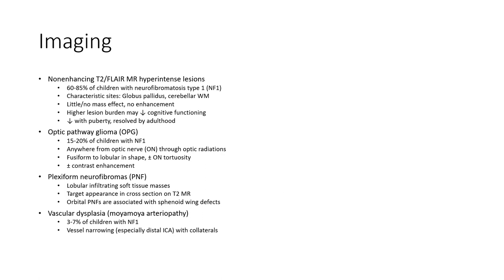Imaging: Non-enhancing T2 FLAIR hyperintense lesions are seen in 60–85% of children with neurofibromatosis type 1. Characteristic locations include the globus pallidus and cerebellum. These lesions show little or no mass effect and no enhancement. Higher lesion burden may decrease cognitive function. These lesions typically decrease by adulthood.